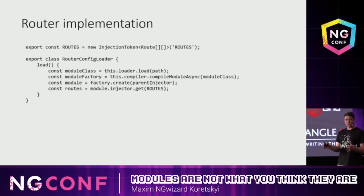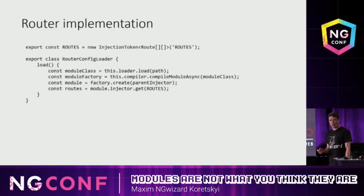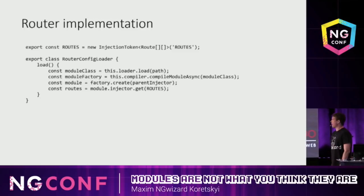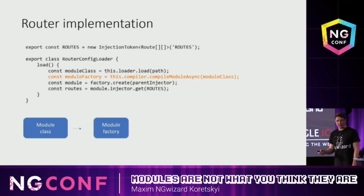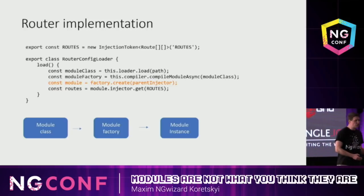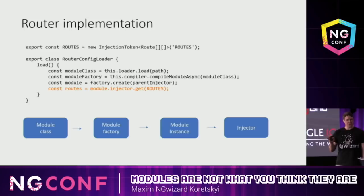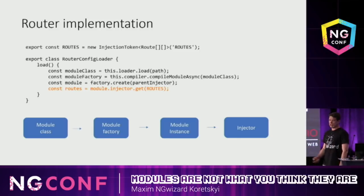This demonstrates what the router does to lazy-load a module and retrieve routes from it. I removed all the irrelevant code and ended up with just four lines. Let's go step by step: first, it lazy-loads a module class; then it compiles it and gets a module factory; then this factory is used to create a module instance and an injector; and then the router uses this injector to retrieve the routes. It probably doesn't make much sense yet — but don't worry, because right now we'll explore the concepts involved in each of these steps.